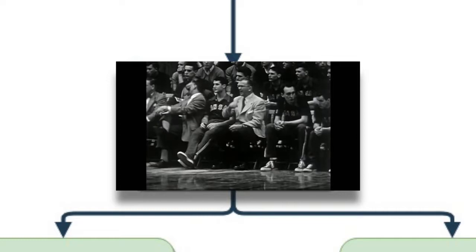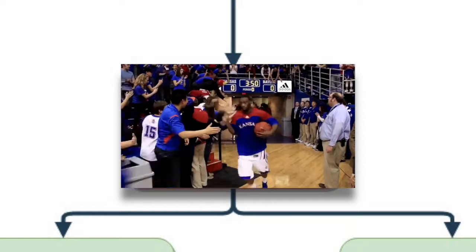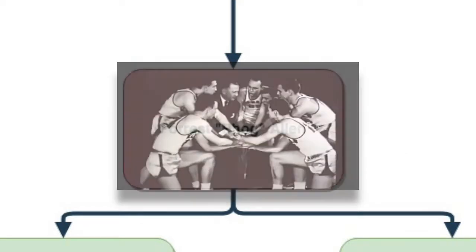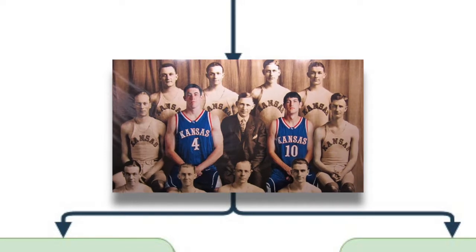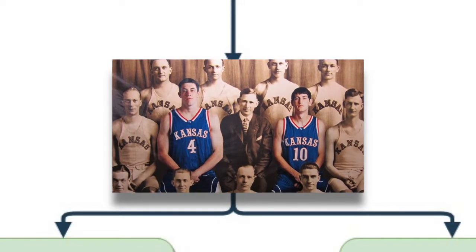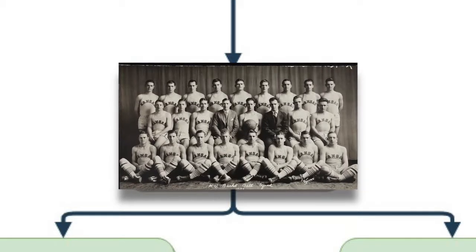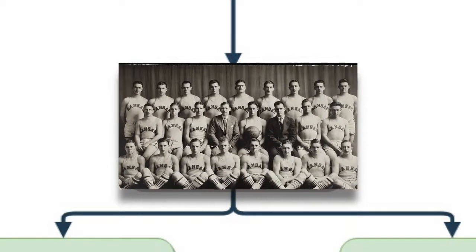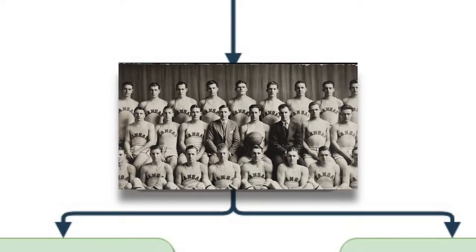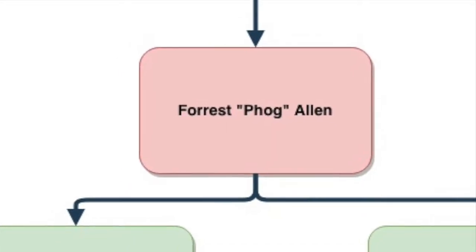In his time at Kansas, not only did he win the 1952 NCAA tournament and was the runner-up in 1940 and 1953, but he also won a total of 24 conference championships and totaled 590 wins. Though he left his larger-than-life impression on the University of Kansas, he also left an impression on some of his players. The coaching tree continues to branch off onto some of his well-known players that would go on to make historic names for themselves.